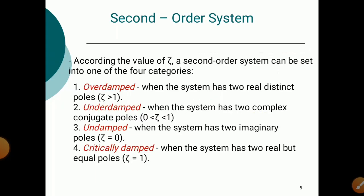According to the value of ζ, a second order system falls into one of four categories. Over-damped: when ζ > 1, the system has two real distinct poles. Under-damped: when 0 < ζ < 1, the system has two complex conjugate poles. Undamped: when ζ = 0, the system has two imaginary poles. Critically damped: when ζ = 1, the system has two real but equal poles.